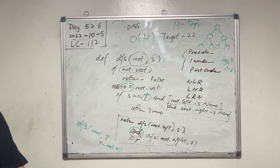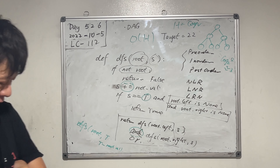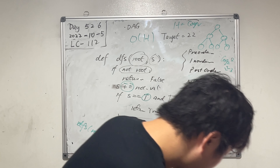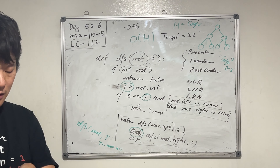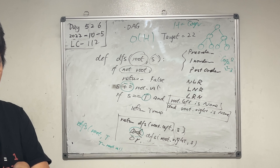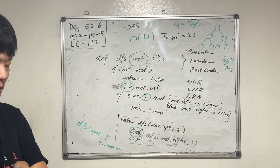We have a binary tree and a target. We're trying to find out if it's possible — if there's a path from root to any leaf where the sum adds up to the target T.